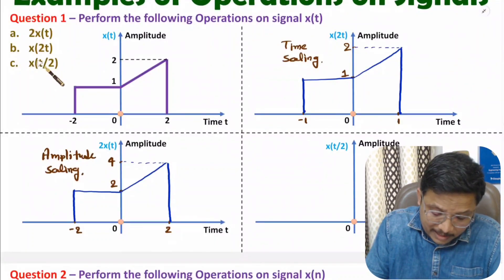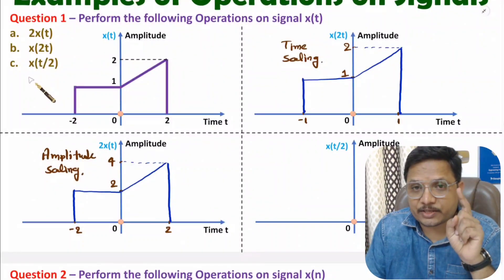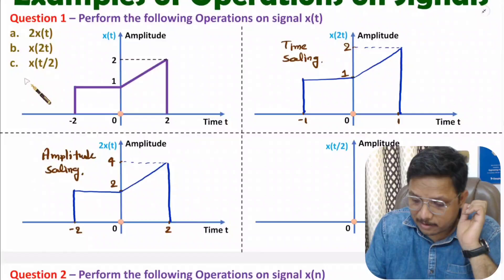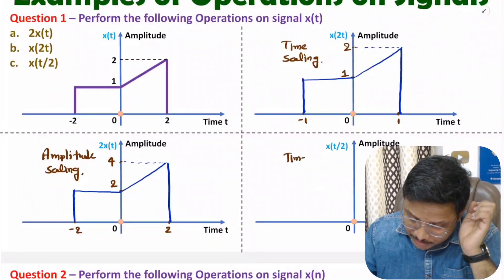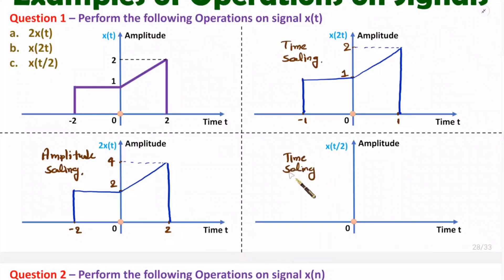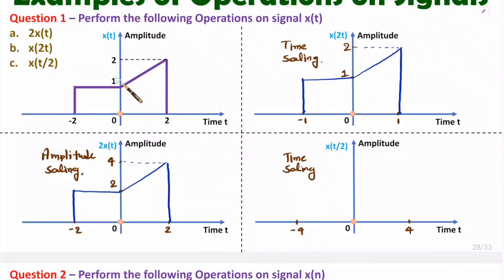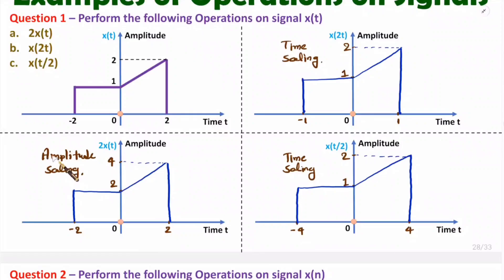Now I will explain x(t/2). Here we also perform time scaling, but this operation is time expansion by scale factor two. On the time axis, minus two becomes minus two times two, which is minus four, and plus two becomes plus four. The amplitude remains as is in time scaling — plus one and plus two. Shape-wise the signal is the same. This is how we perform time scaling and amplitude scaling.